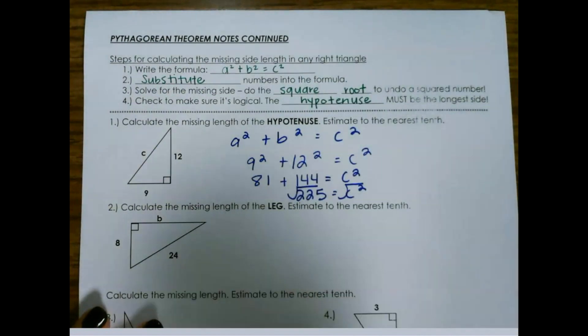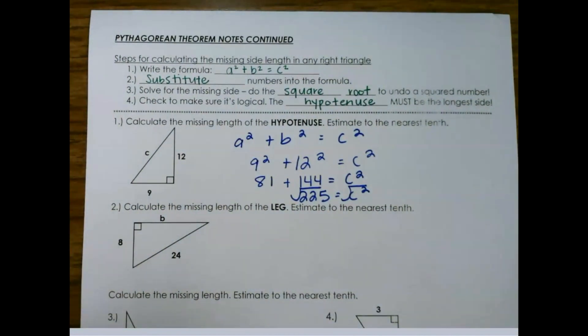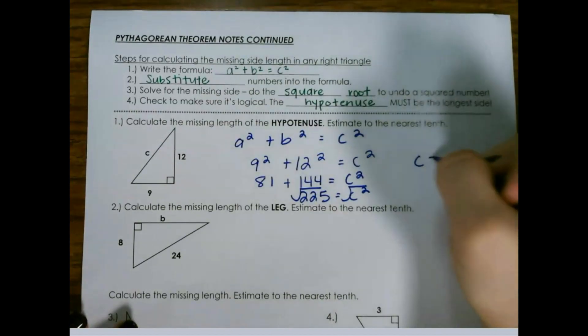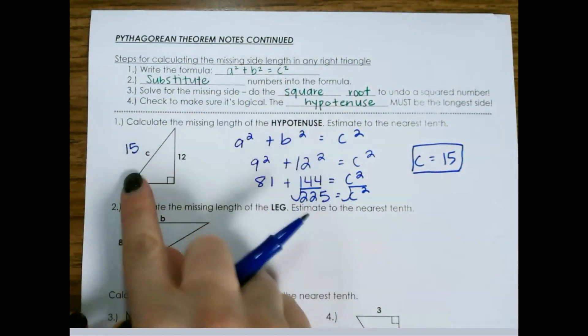And again, take the square root to undo a square number. And the square root of 225 is 15. And that should be our longest side, which is true.